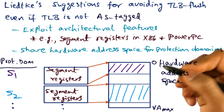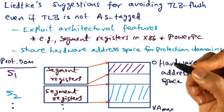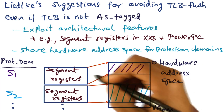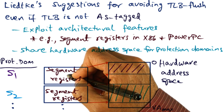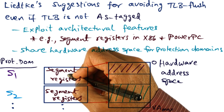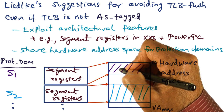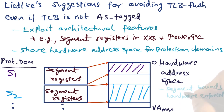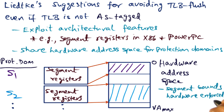Once we do that, there is no need for flushing the TLB on a context switch. Because even before we consult the TLB to see if there is a match for a particular virtual address, the segment register will act as our first line of defense and say whether this address is valid or not — whether it is within the bounds of legal addresses that can be generated by this protection domain. In other words, the segment bounds are hardware enforced.